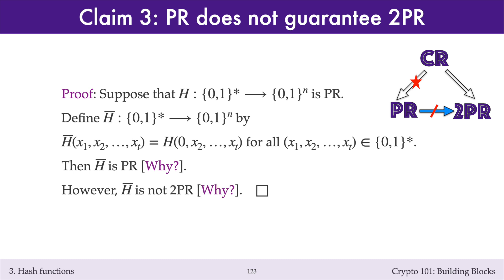I'll next argue that h-bar is not second pre-image resistant. Suppose we're given a randomly selected message x. Then we can easily find a second pre-image for x with respect to h-bar — namely by flipping the first bit of x to get message x-primed. This shows that h-bar is not second pre-image resistant. So h-bar is a hash function that is pre-image resistant but is not second pre-image resistant.